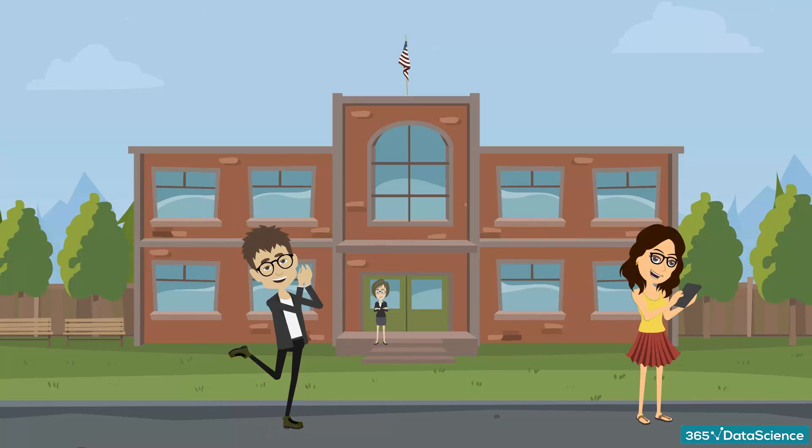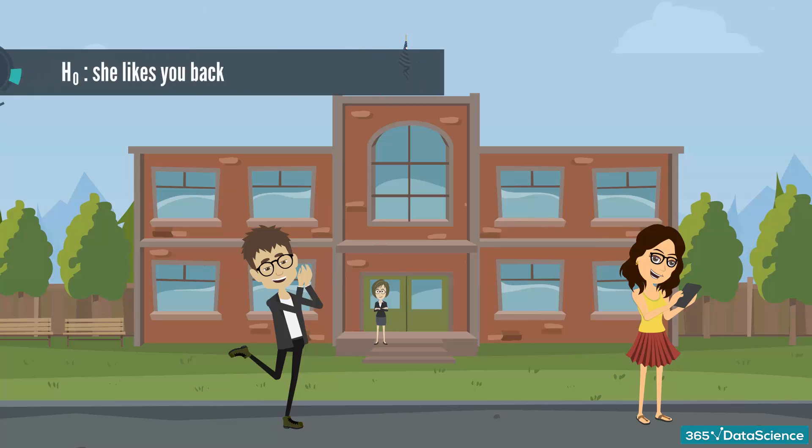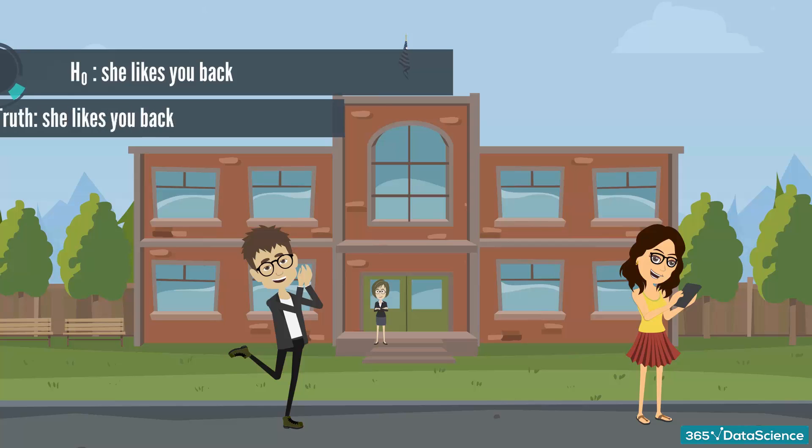There are two errors you can make. First, if she likes you back and you don't invite her out, you are making the type 1 error. The null hypothesis in this situation is she likes you back. It turns out that she really did like you back.